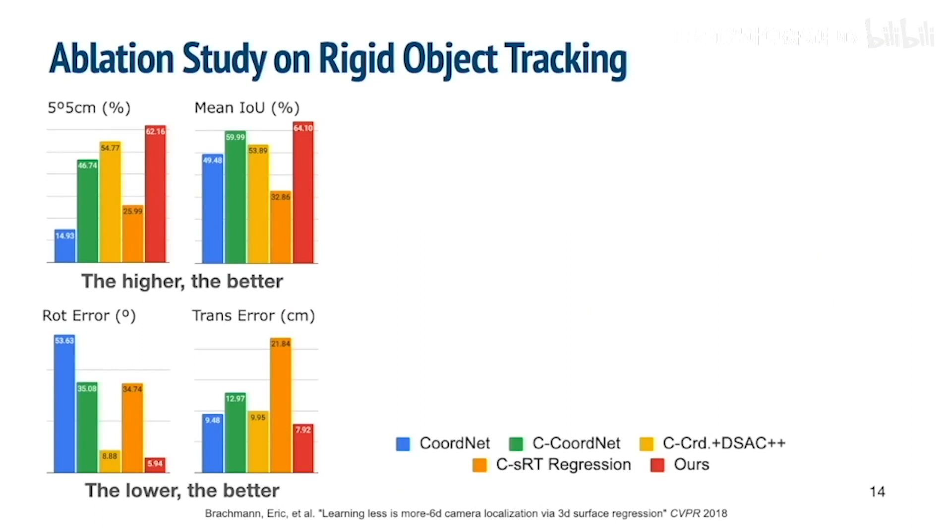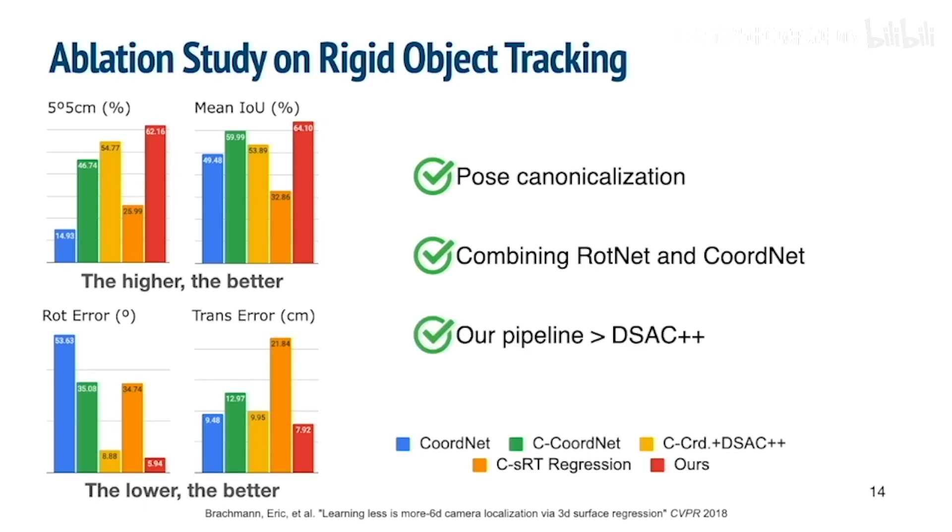Here we compare our method to several variants. Our results indicate that pose canonicalization is always beneficial, and combining together rotation net and coordinate net significantly outperforms using each of them alone. Also, our way to make the pipeline end-to-end differentiable performs better than DSAC++.